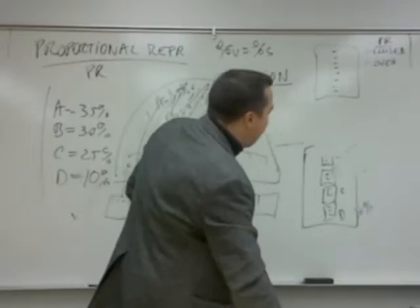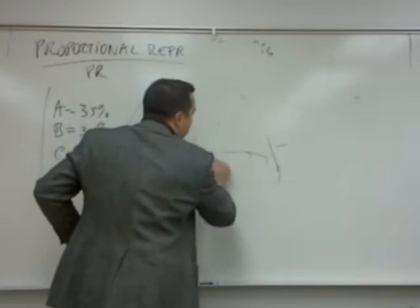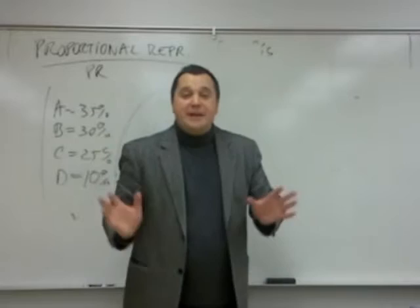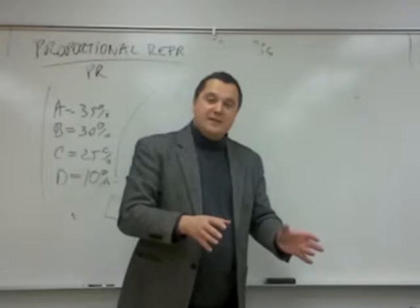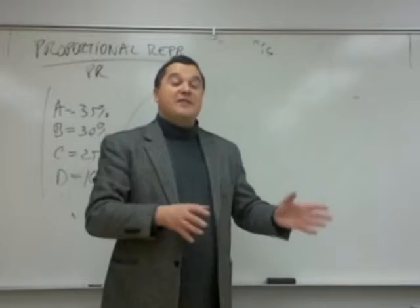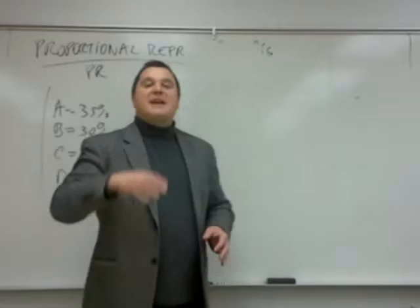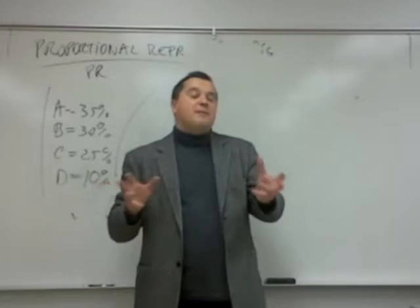These are the two major dimensions. The dynamic between these two models — though not absolute — is broadly the dynamic between efficiency and representativity. SMD tends to be more efficient because it creates stronger, bigger majorities, but it's not representative — it's undemocratic in many ways. More people are unrepresented than represented. So it's efficiency versus representation.